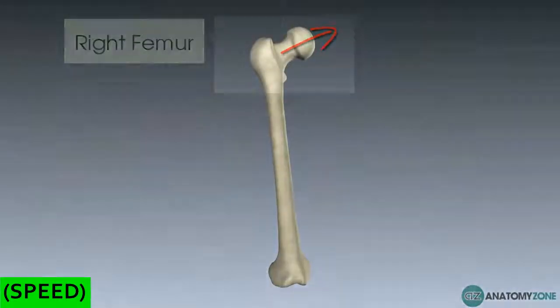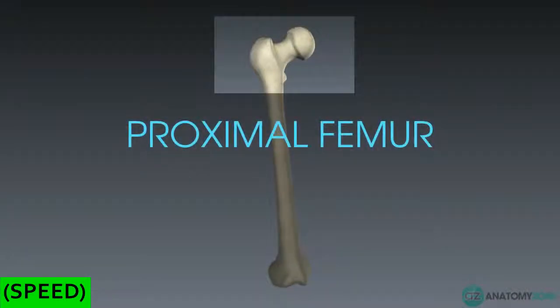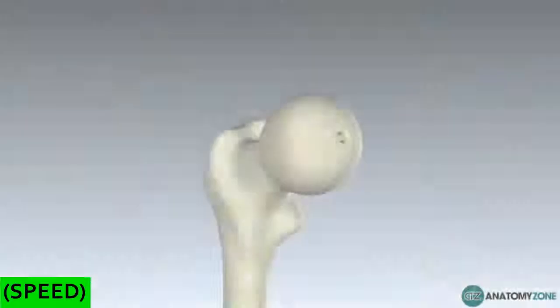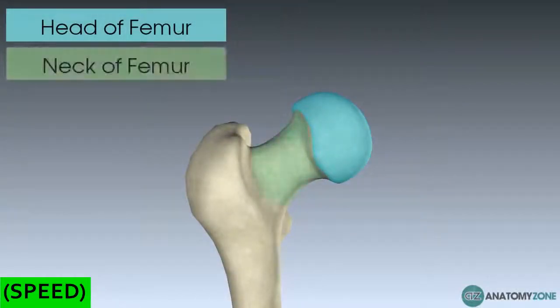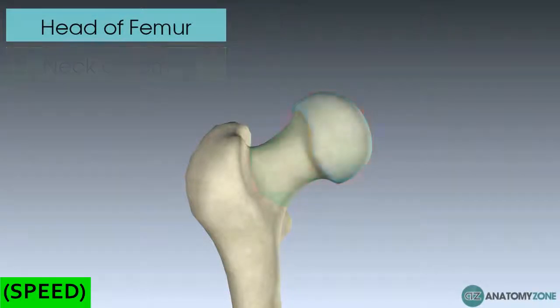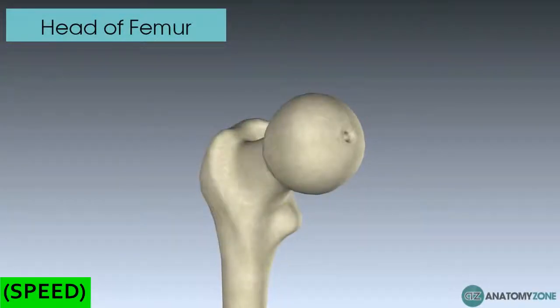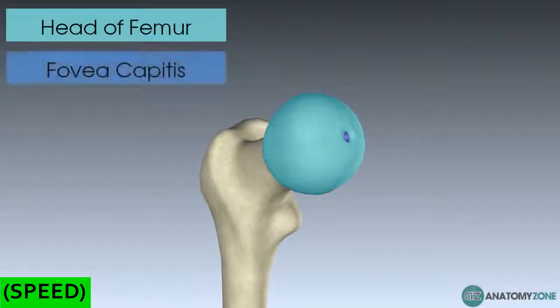Let's look at some proximal features of the femur. The first thing to notice is the head of the femur, and next to it we have the neck of the femur. The only important feature of the head of the femur is the fovea capitis — the central depression you can see in the centre of the femur head.